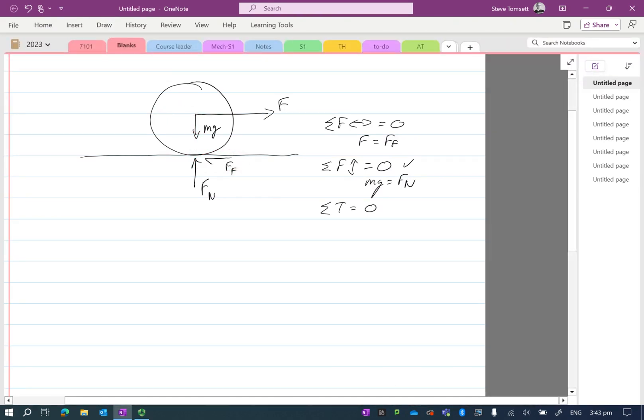If we have a look at the components that we have, if I take these two reaction forces that we have, so we have an Fn acting up and we have a friction component acting this way, I can replace that with equivalent single force acting at this angle.